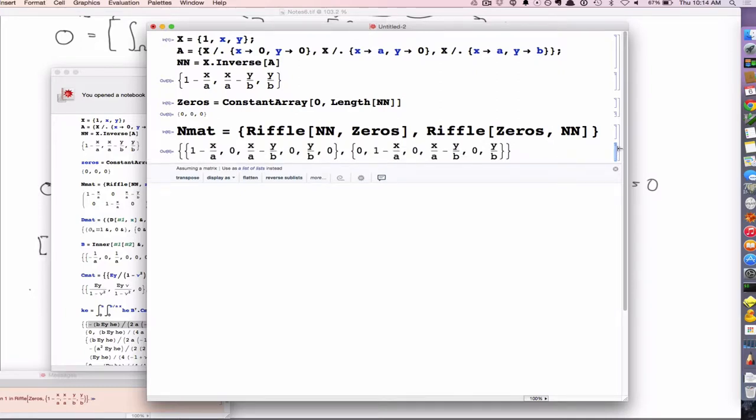So can everybody see what we got? It's N1, zero, N2, zero, N3, zero, zero, N1, zero, N2, zero, N3. So that's my N matrix.